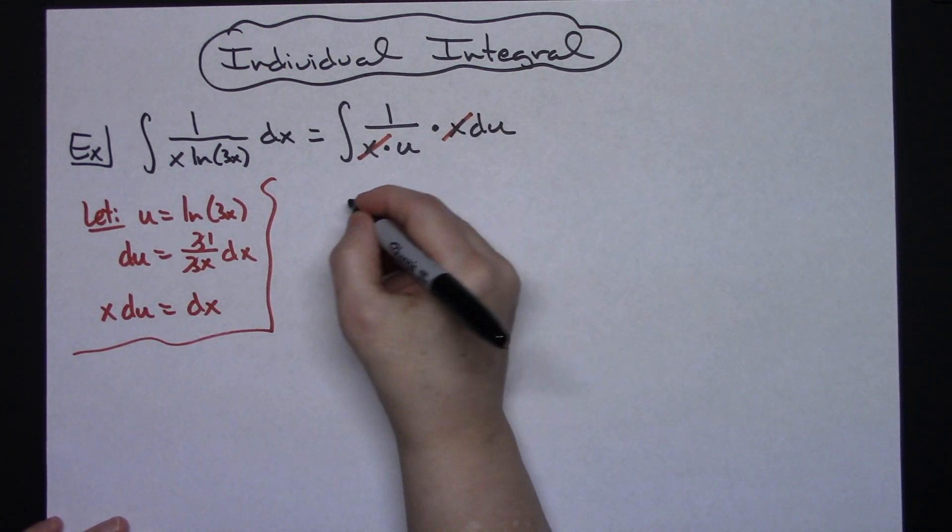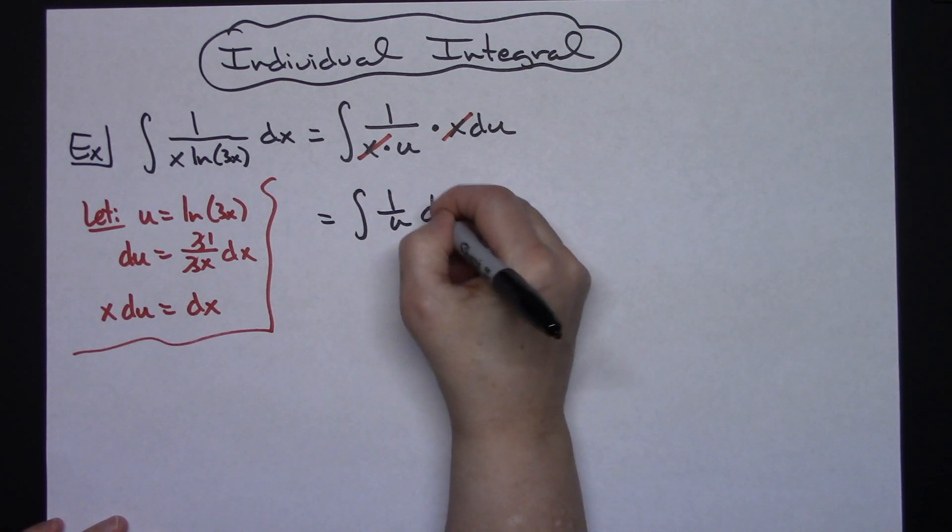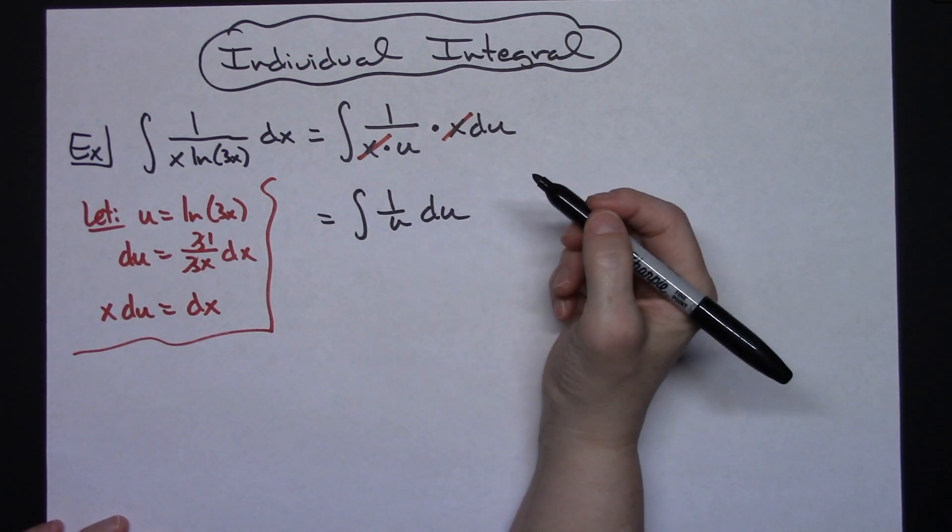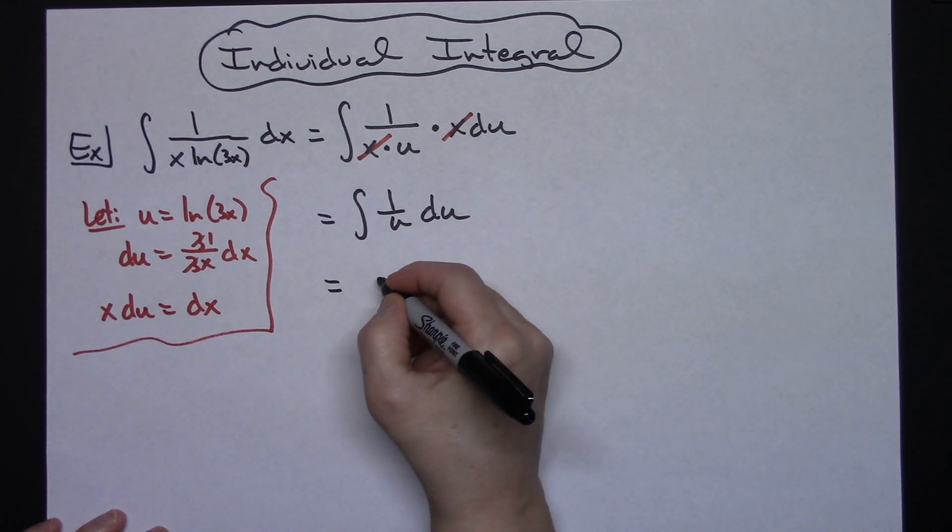Hopefully at that point you can see that those x's are going to cross out, which is going to leave you with the integral of 1 over u du. And hopefully at this point you have that memorized as being the natural log absolute value of u.